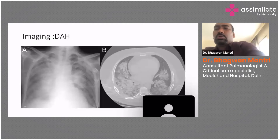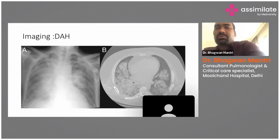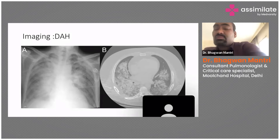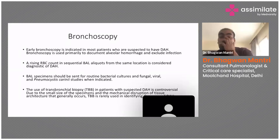In DAH, the picture may look like cardiac failure, but the symptoms differ — in failure the patient presents with dyspnea but without hemoptysis or anemia. DAH presentations may be acute or subacute, mostly within seven days, which can cause confusion with failure. However, the typical 'crazy paving' appearance on CT is seen specifically in DAH and helps distinguish it.